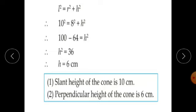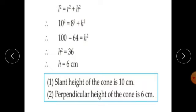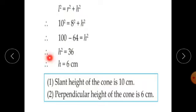Now find the perpendicular height H. We know L squared equals R squared plus H squared. L is 10, so 10 squared equals 8 squared plus H squared. Therefore 100 minus 64 equals H squared, so H squared equals 36.